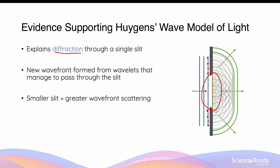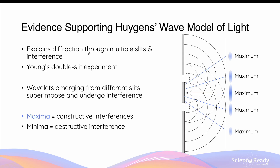Huygens' wave model also explains why the size of the aperture affects the degree to which light will diffract. His wave model also explains diffraction when light passes through multiple slits. For example, in Young's experiment using a double slit, wavelets emerging from two slits will superimpose after they have undergone diffraction. A maximum, or bright spot, will form on the screen behind the slit as a result of constructive interference, and a minimum, or dark spot where light is not observed, will be formed as a result of destructive interference.